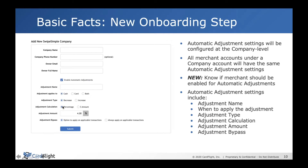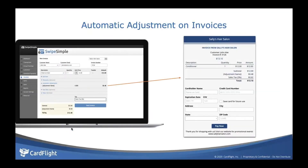Adjustment types: do you want to increase or decrease? Do you want to charge them for using a credit card, or give them a discount for using cash? You can make all of that customizable. Adjustment calculation can be a percentage or a flat amount. At time of sale, you can always apply it automatically or give the cashier the option to apply it. It's super easy to set up and use.